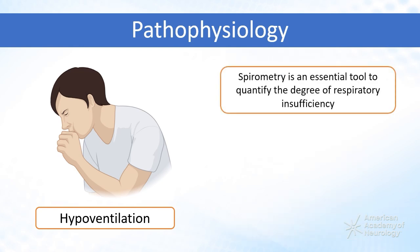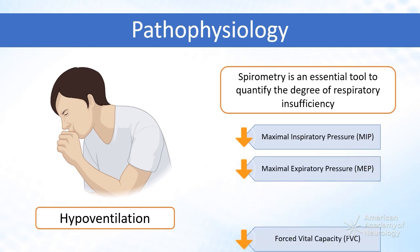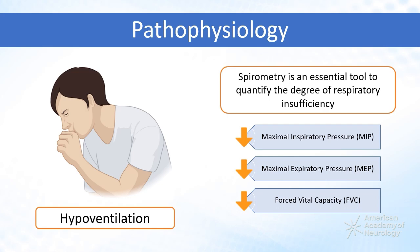Spirometry is an essential tool used to quantify the degree of neuromuscular respiratory insufficiency. Common findings include reduced maximum inspiratory pressure, MIP, maximum expiratory pressure, MEP, and forced vital capacity, FVC.